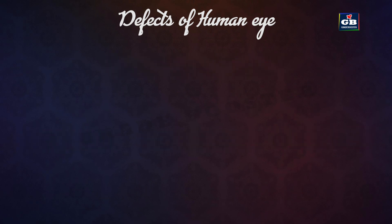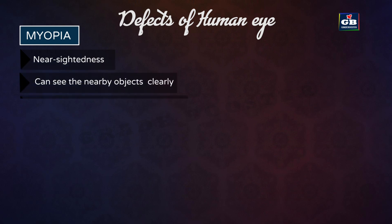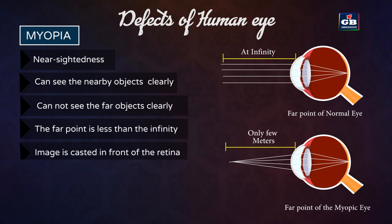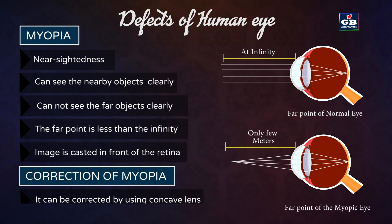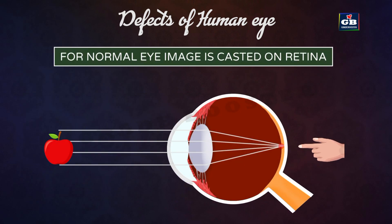Myopia: this defect of the eye is called nearsightedness. Persons with this defect can see nearby objects clearly but cannot see far objects clearly. The normal far point of the human eye is infinity, but for a myopic person the far point is less than infinity — only a few meters away.